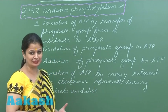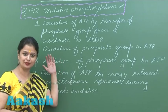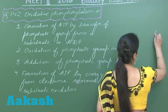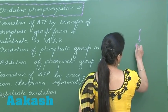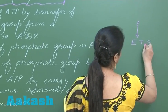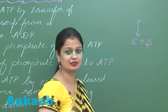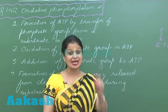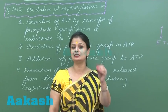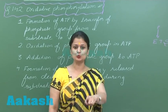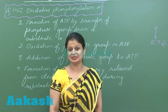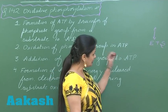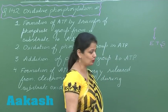This electron enters the ETS (Electron Transport System). As the electron travels through the ETS, there is release of energy, and this energy is used for the synthesis of ATP in oxidative phosphorylation.